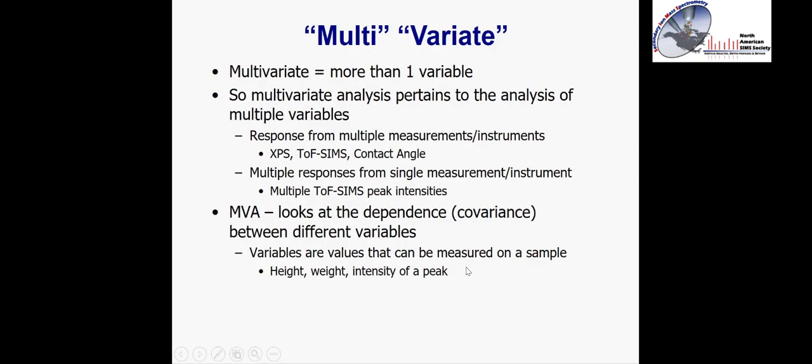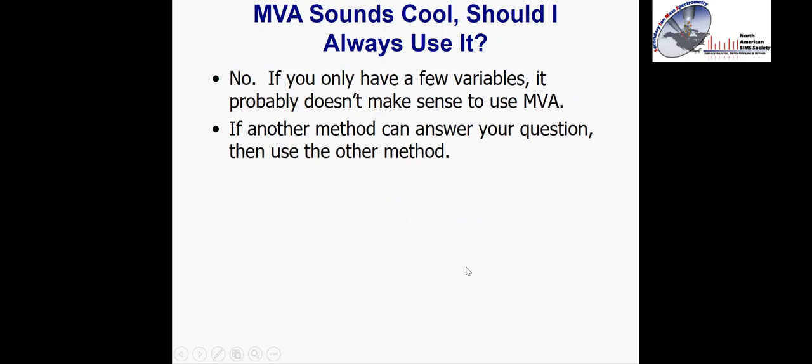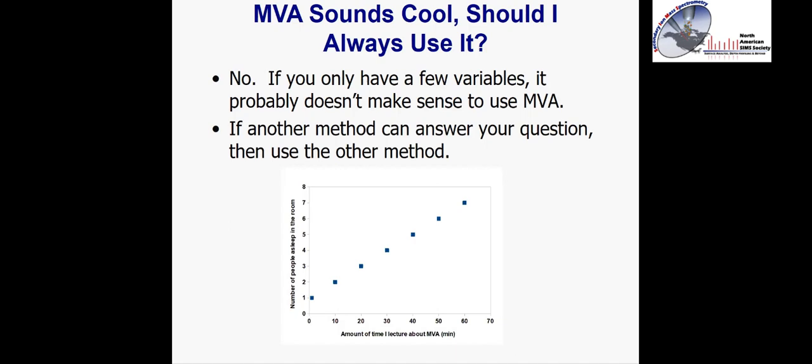You've probably heard a lot about multivariate analysis and may ask yourself whether you should use it all the time. My answer is no. If you only have a few variables or a very simple question you're trying to answer with SIMS, it's best to use your standard SIMS analysis methods. I always give the example that if you plotted the amount of time I lecture about multivariate analysis versus the number of people who fall asleep, you'd see a linear trend that's very easy to understand without any advanced methods.